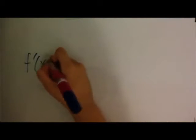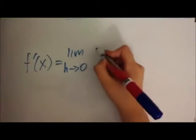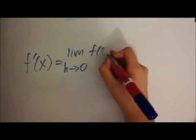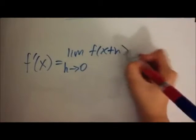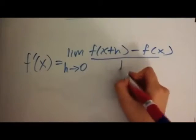So up until now we've been finding the derivative of x using limits, where the limit as h approaches 0 is f of x plus h minus f of x all over h.